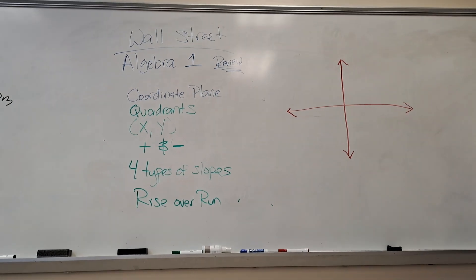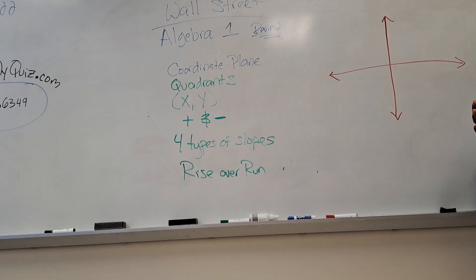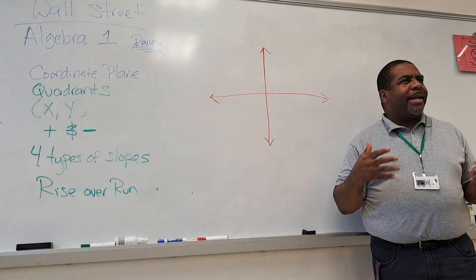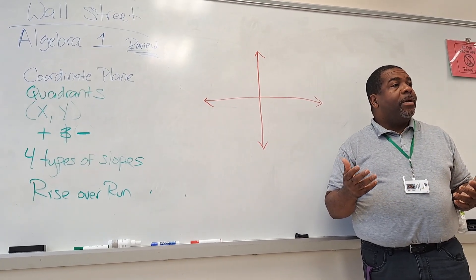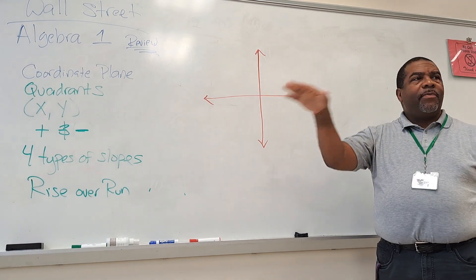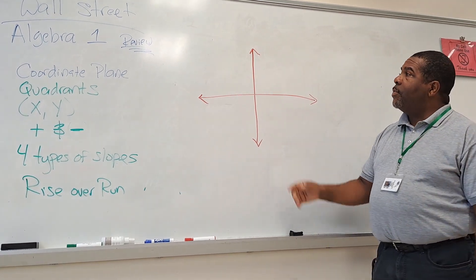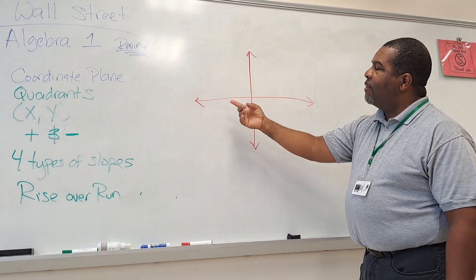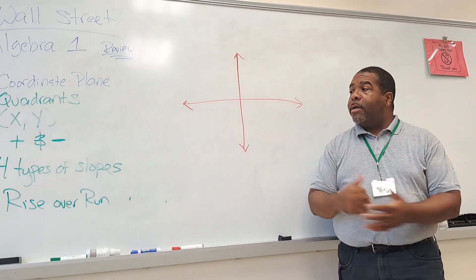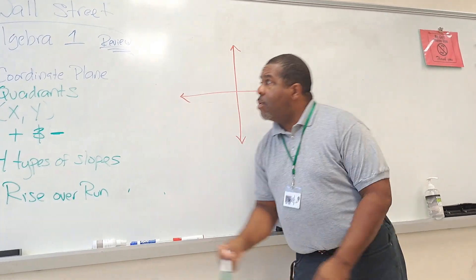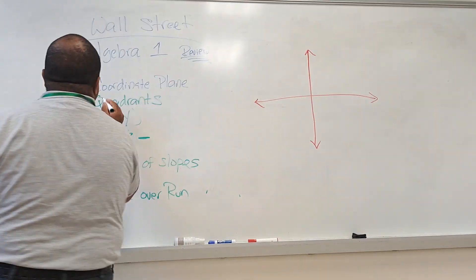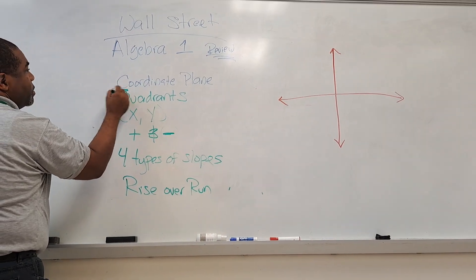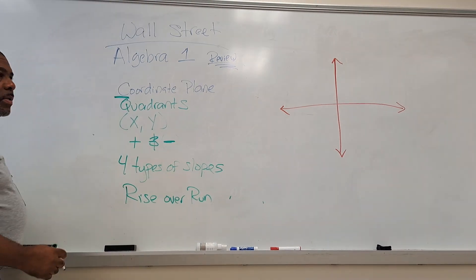All right, coordinate plane. When we look at the world, I used to talk about that song by Khalid, Send Me Your Location. The world is really divided up into four different coordinate planes. We have up and down, we have left and right. So when we look at a coordinate plane, the first letter in the word coordinate is what? C, right?